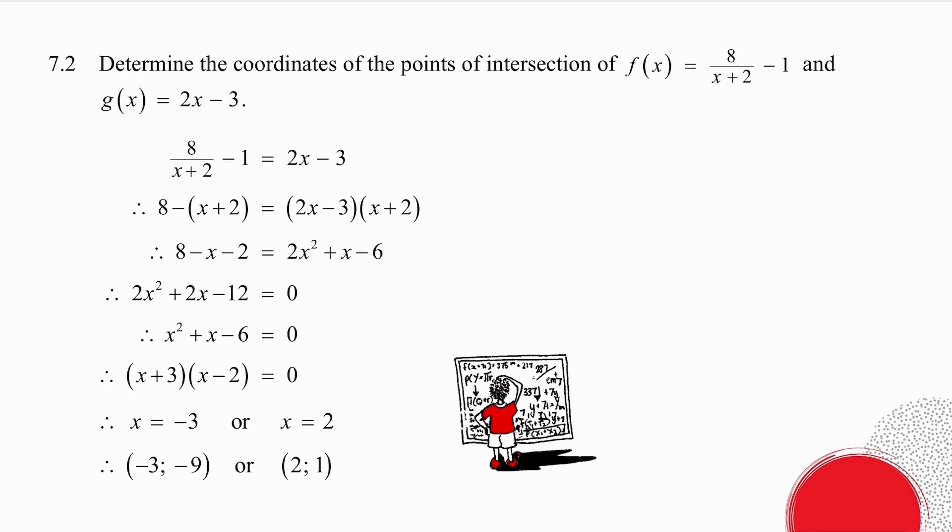How do you find where two graphs cut each other? Well, you make the equations equal. You have an equation with fractions. So multiply by the common denominator. So multiply every term by x plus 2. Multiply the brackets and set up your quadratic equation. Again, notice there's a common factor of 2. So I divide every term by 2.